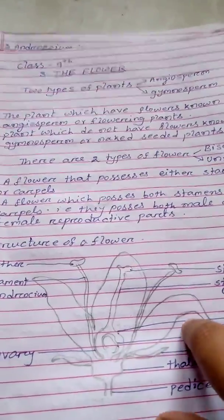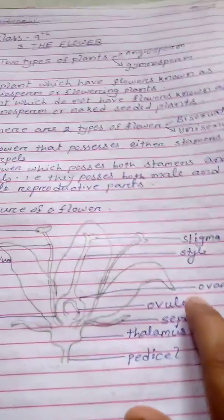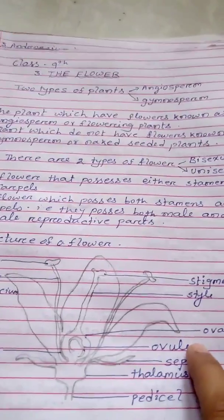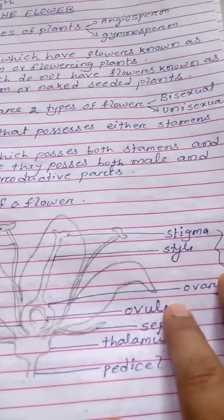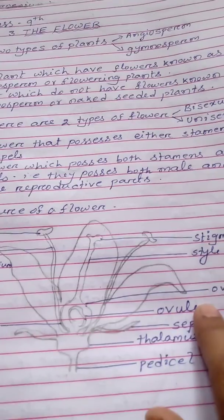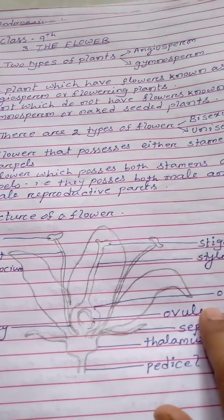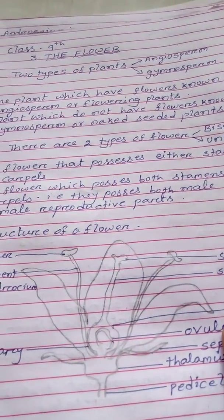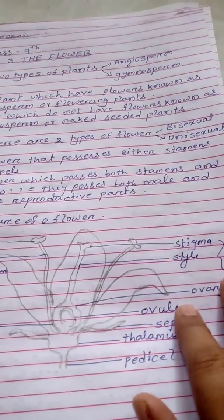Now we will know what is angiosperm. The plant which have flowers are known as angiosperm, or it is otherwise known as flowering plants. And the plant which do not have flowers are known as gymnosperm, or naked-seeded plants.